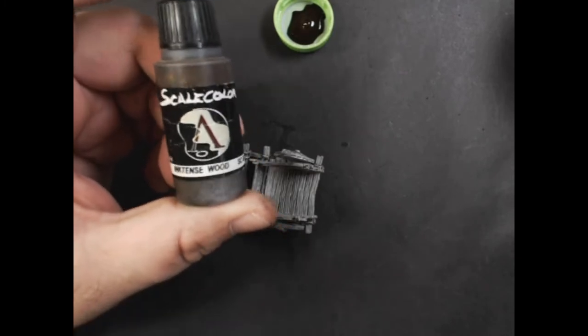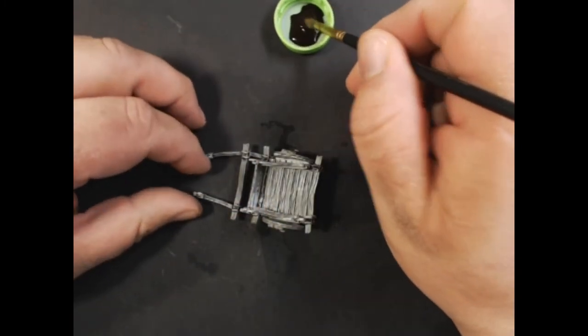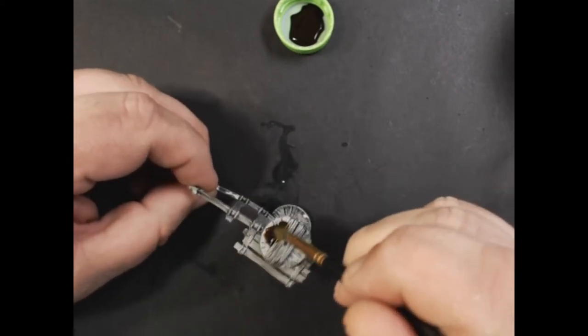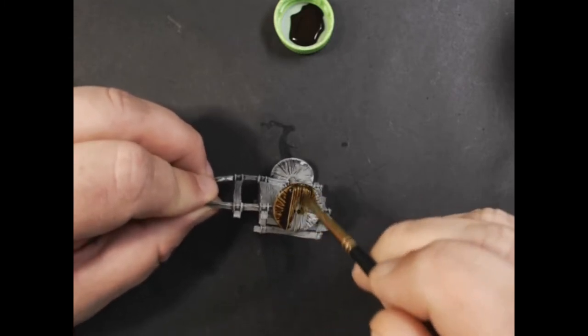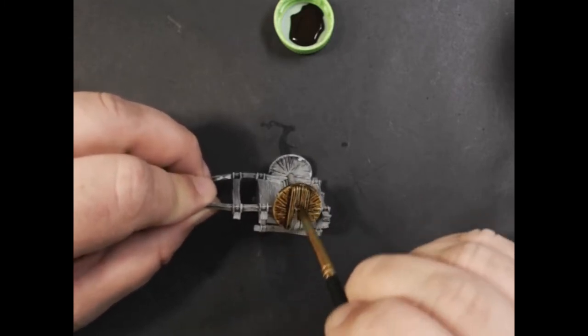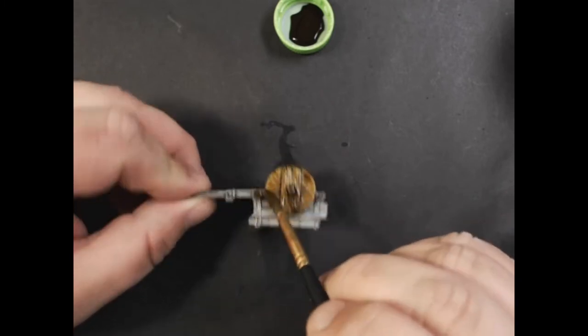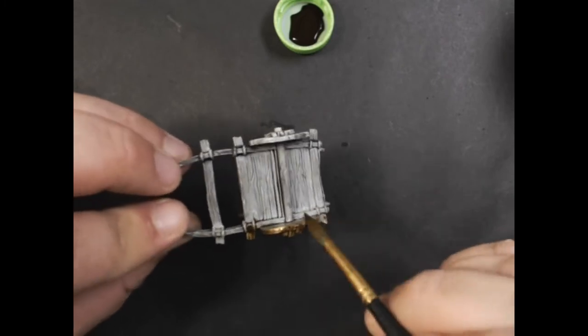All right, we let that dry completely. Next up is some Scale 75 Inktense Wood ink. We're going to cover the entire model with this as well. Try not to let it pool up too much but make sure you cover the entire model.